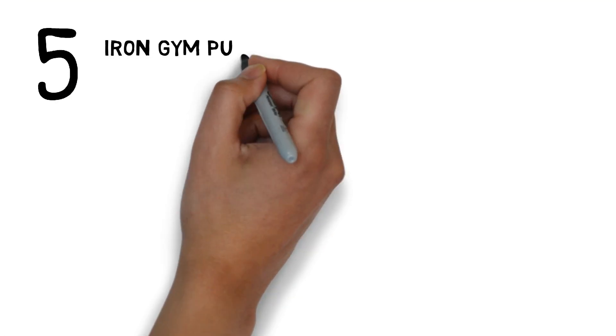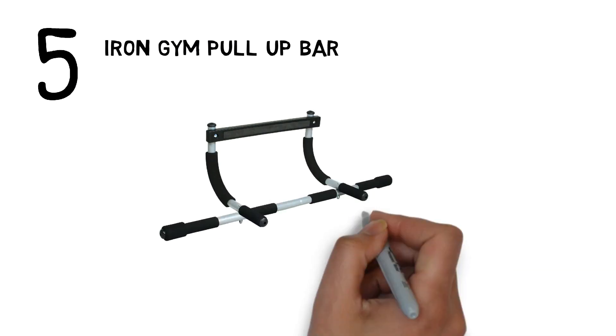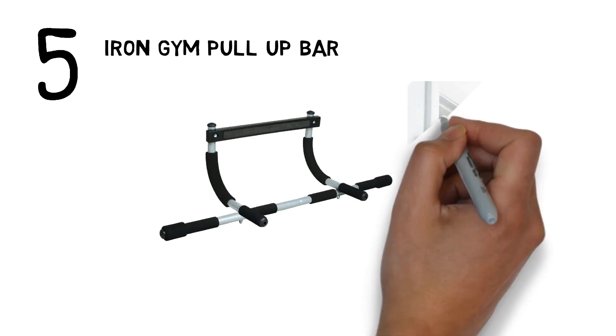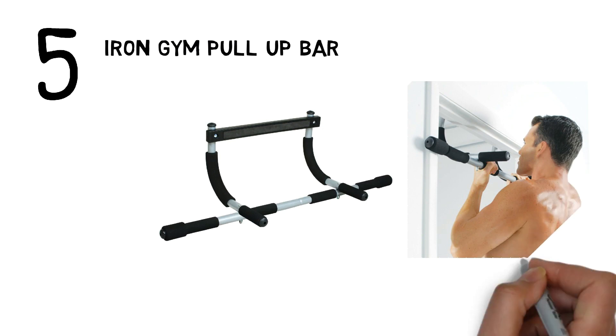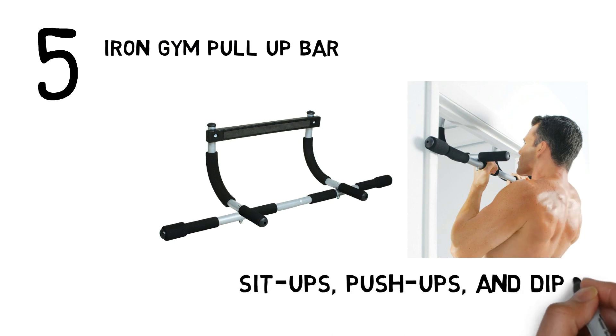And for our final pick at number 5 we have the Iron Gym Pull-Up Bar. The Iron Gym Pull-Up Bar works much like the Perfect Fitness Multi-Gym. It hangs on a doorframe and stays in place through leverage. You can also remove the pull-up bar to perform sit-ups, push-ups, and dips.